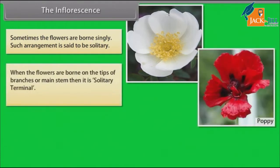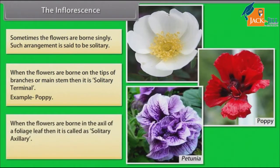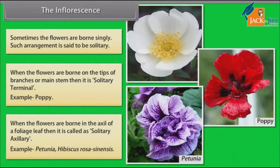When the flowers are born on the tips of branches or main stem, then it is solitary terminal. Example: poppy. When the flowers are born in the axil of a foliage leaf, then it is called solitary axillary. Example: petunia, hibiscus, rosa sinensis.